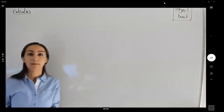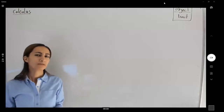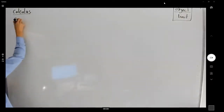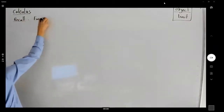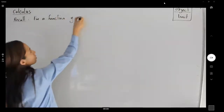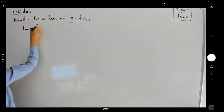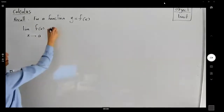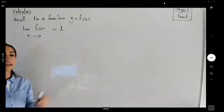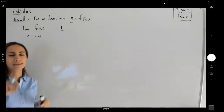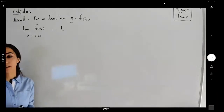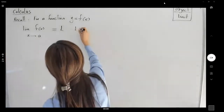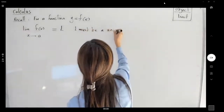So what did we learn so far? We started talking about different types of functions, then we started defining a new concept called the limit. Remember that for a function y equals f of x, the limit of the function as x approaches a — if this exists and is equal to a fixed number L — then L is that y value on the y-axis. But note that if you have two different numbers, the limit does not exist. L must be a unique number.